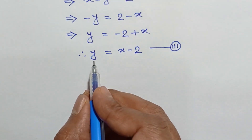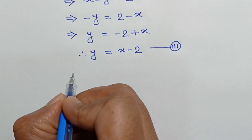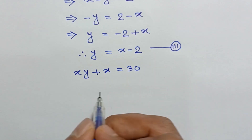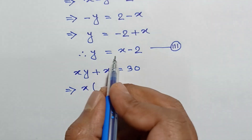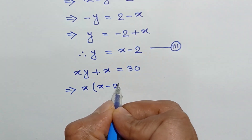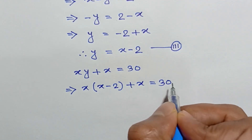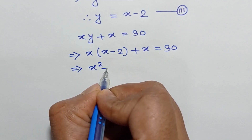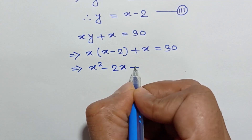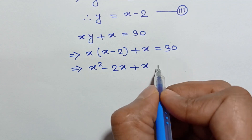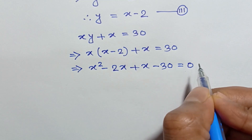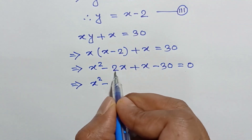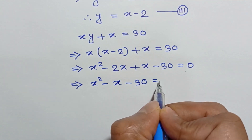Call it equation number 3. Now, substituting the value of y in equation 1, we can write xy plus x is equal to 30. Since y is equal to x minus 2, we have x times (x minus 2) plus x is equal to 30. Expanding: x squared minus 2x plus x minus 30 is equal to 0, or x squared minus x minus 30 is equal to 0.